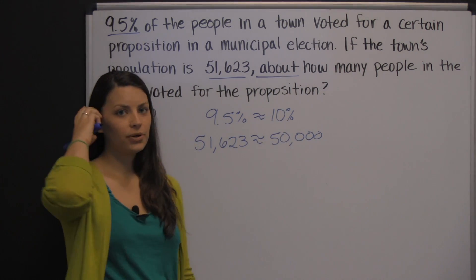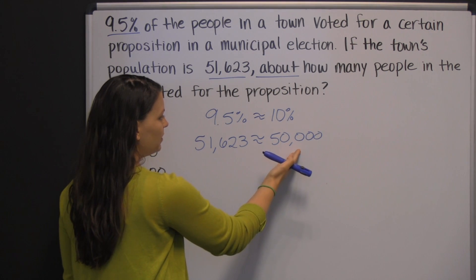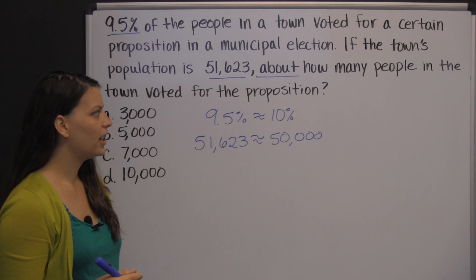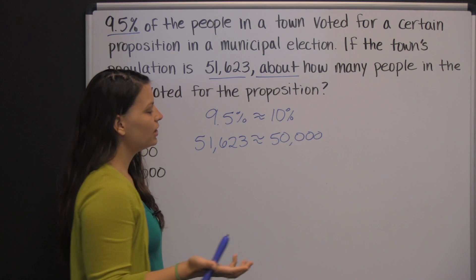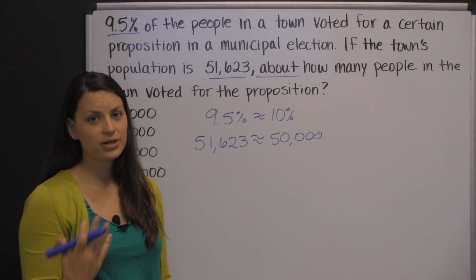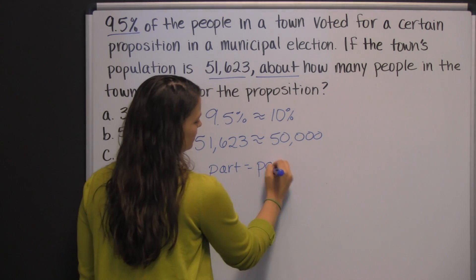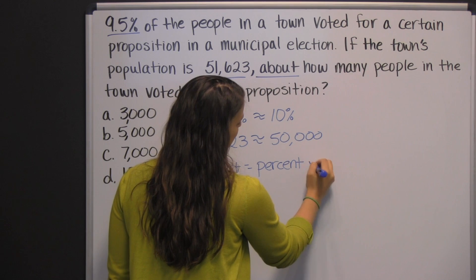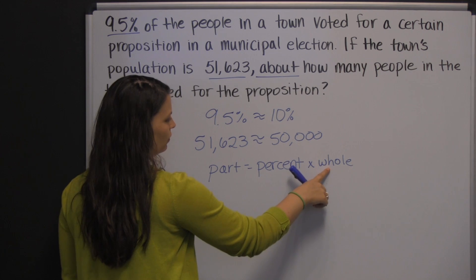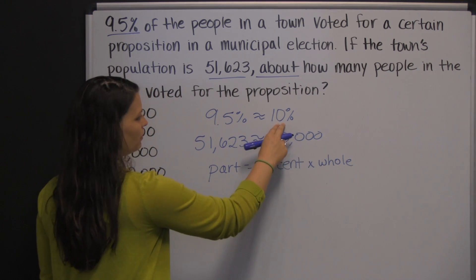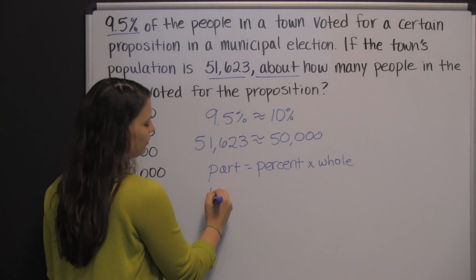That makes our numbers a lot simpler. So, ten percent of fifty thousand people voted for the proposition — that's what we're trying to figure out. You can use the percent equation if that's helpful: the part equals the percent times the whole. In this case, we know the percent and we know the whole — the whole town's population — and what we're looking for is the part: how many people voted for it?